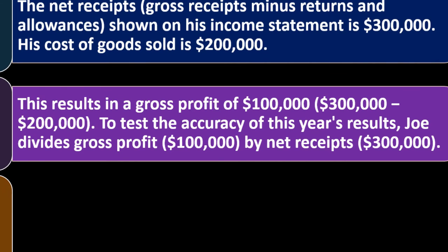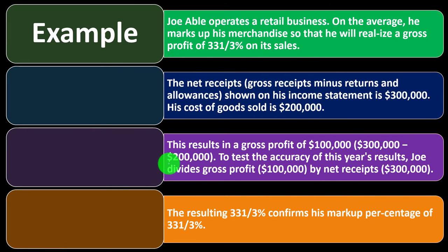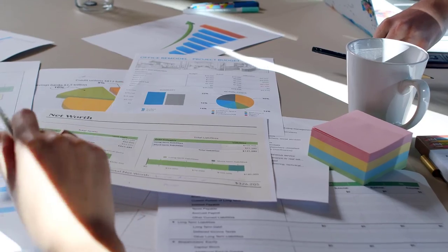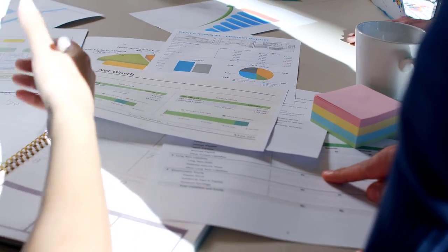So: $300,000 minus $200,000 equals $100,000 gross profit. To test the accuracy of this year's results, Joe divides gross profit ($100,000) by net receipts ($300,000). The result is 33 and one-third percent, which confirms his markup percent. It won't always be exactly that amount — you could have multiple products with different markup percents — but generally people have a good idea of how much they're marking up their items.